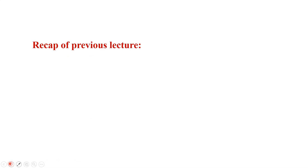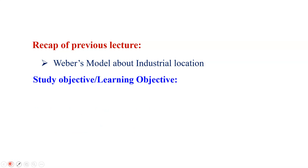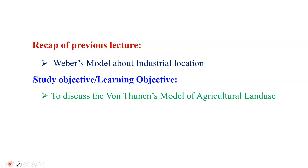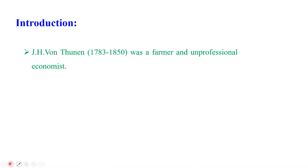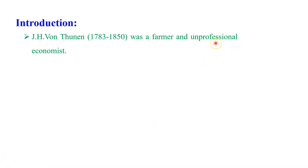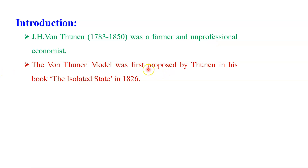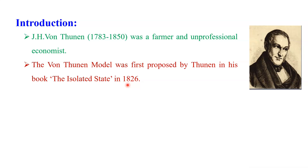In the last lecture, we discussed Weber's model about industry location. Today, we will be talking about Van Thünen's model of agricultural land use. Van Thünen was a farmer and an unprofessional economist. His model was first proposed in his book titled 'The Isolated State,' published in 1826. Whatever information he explained in this model came from his own 40 years of farming experience in Germany. On the basis of his own experience and statistical data, he stated this model.